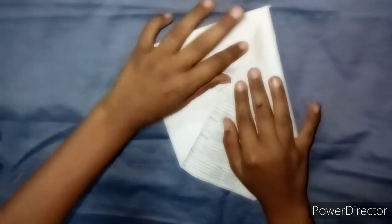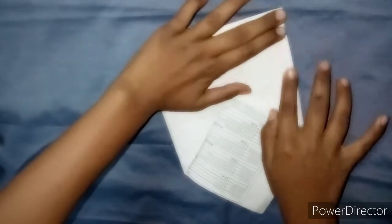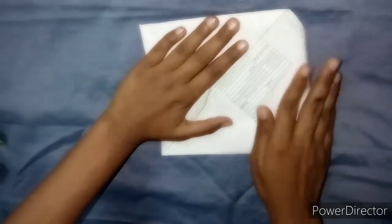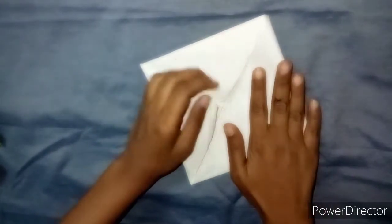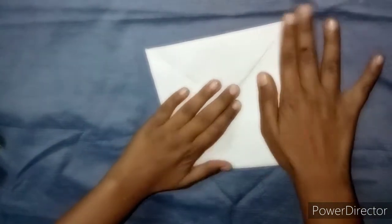Should we fold inwards? Making a triangle. You can see how I am doing. All the four sides should be done in that manner. See? Now turn it.